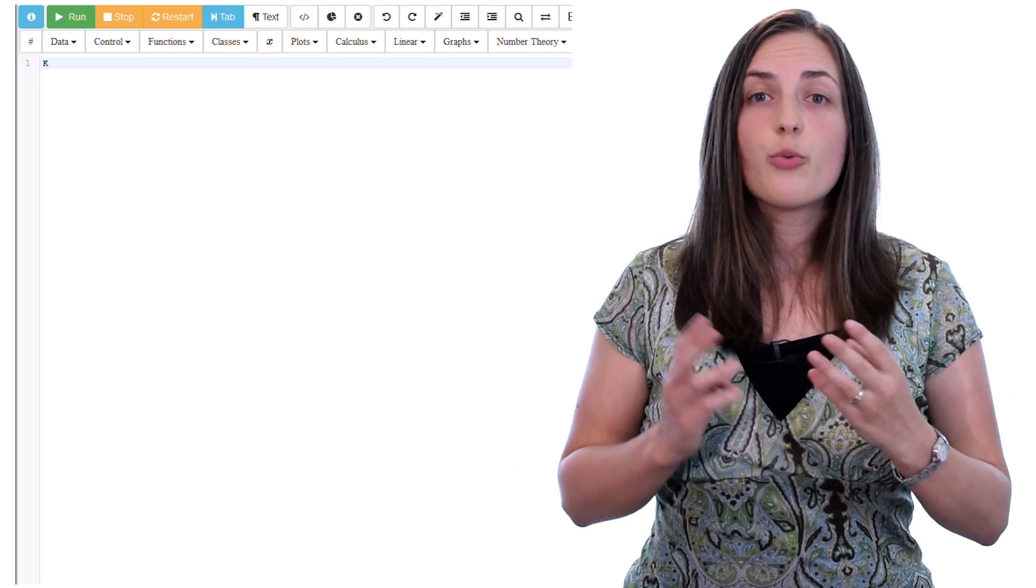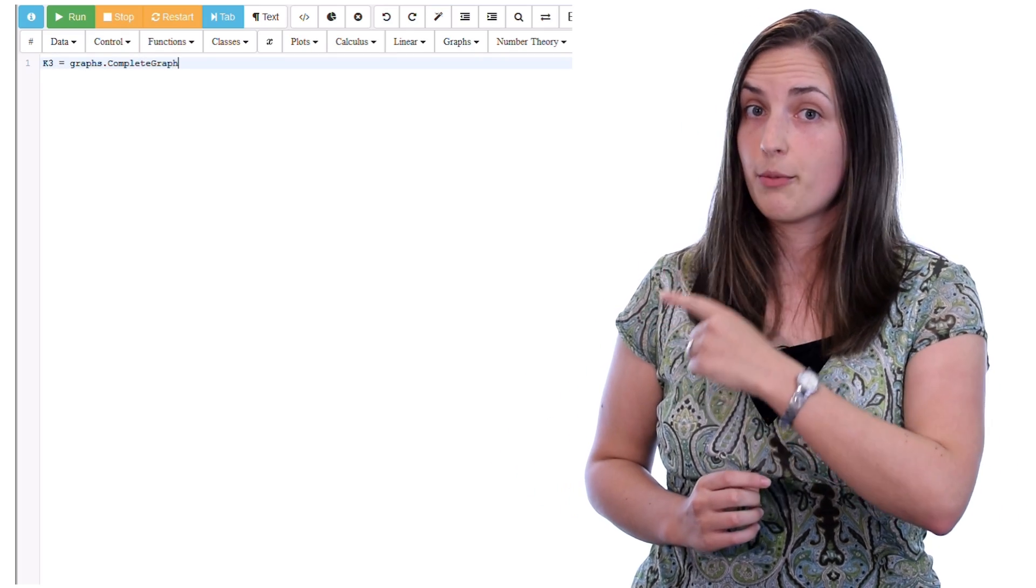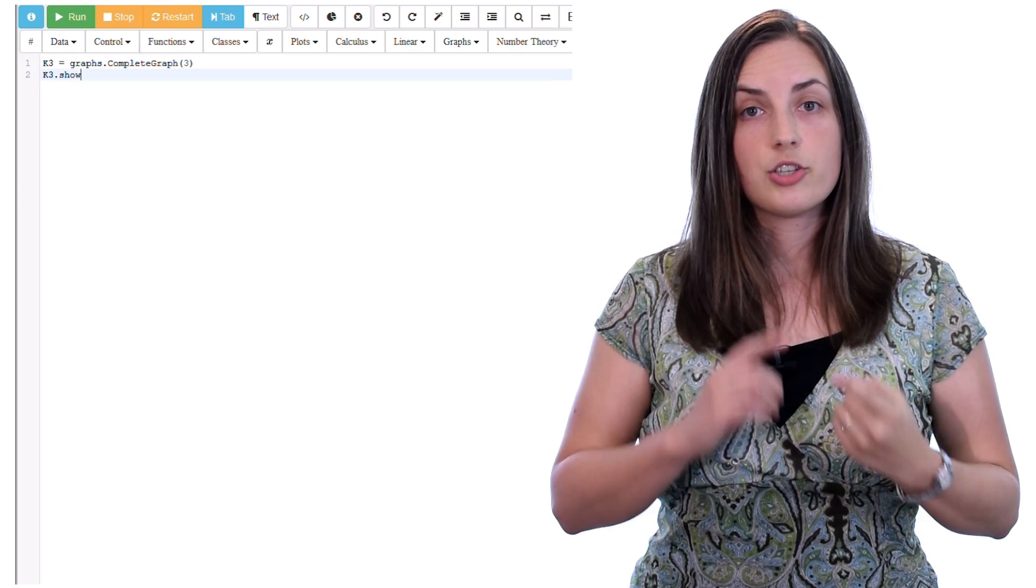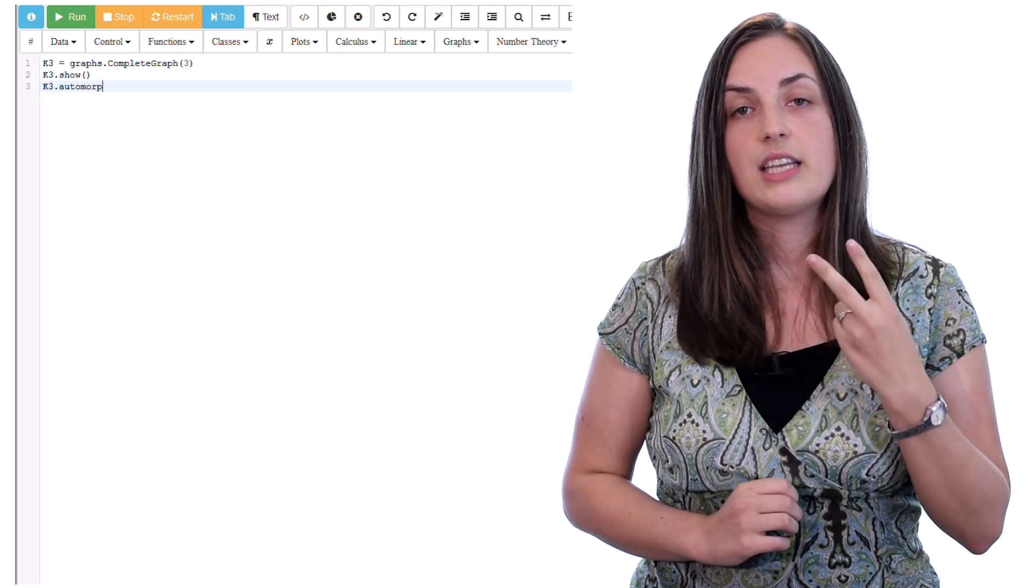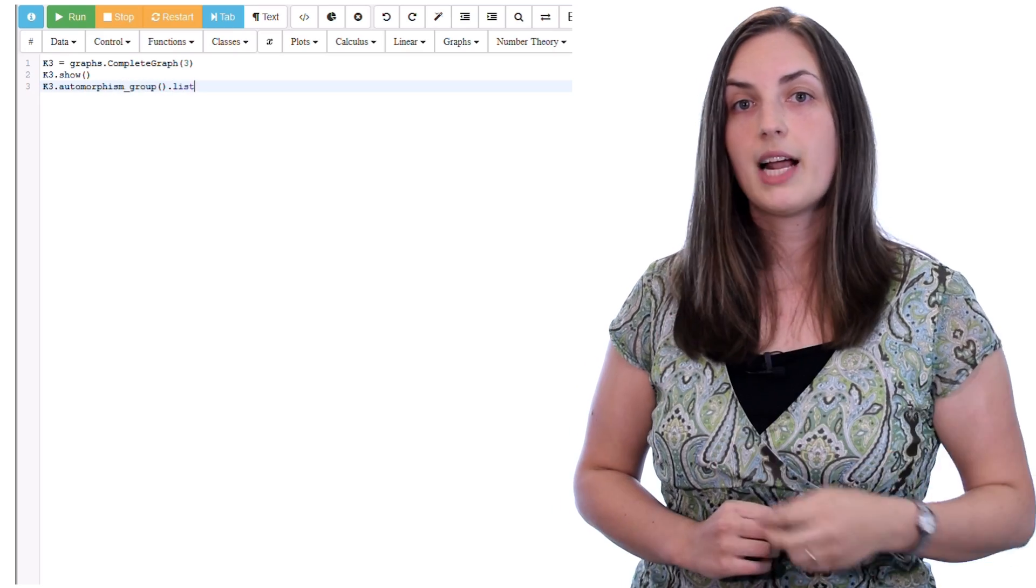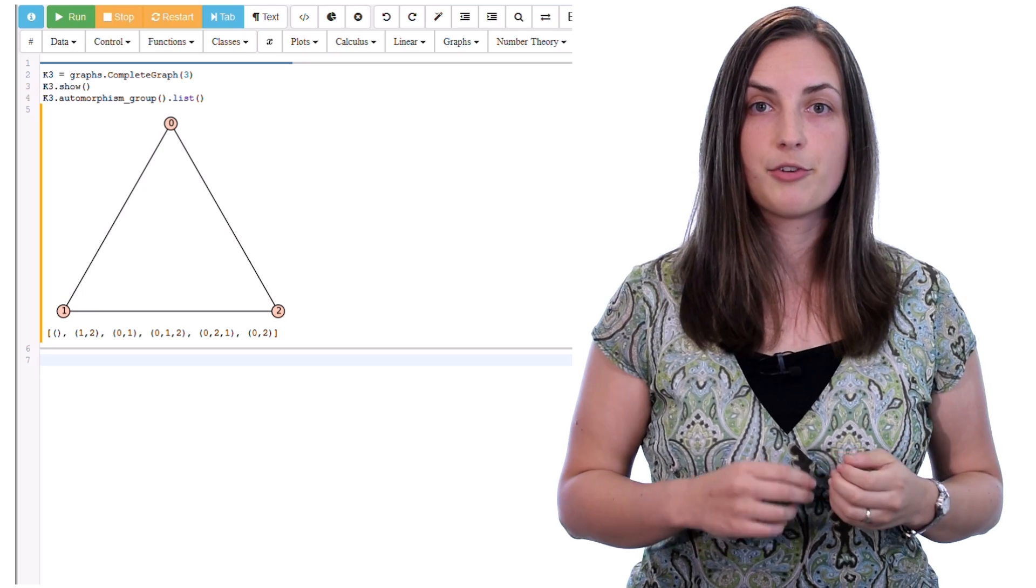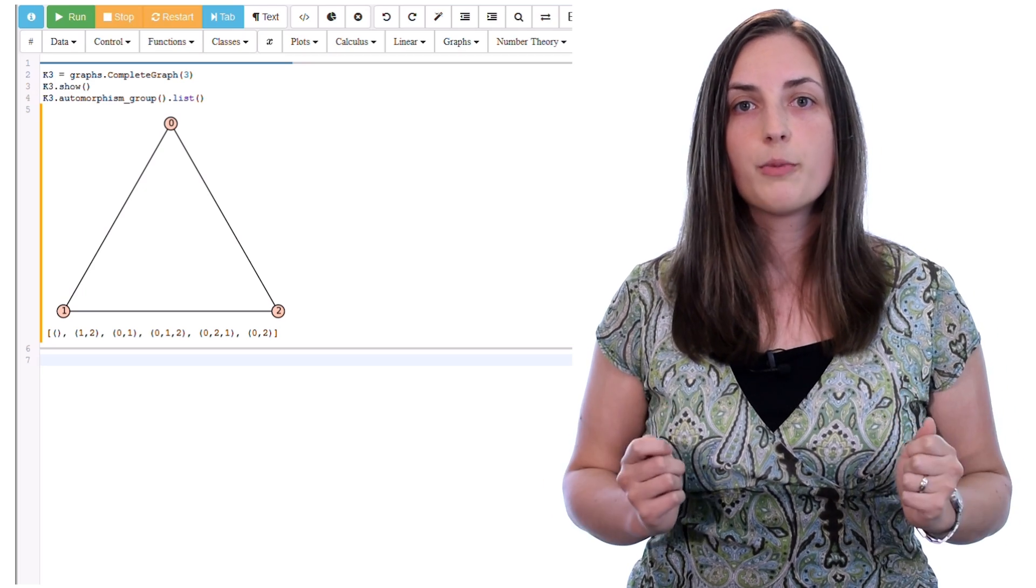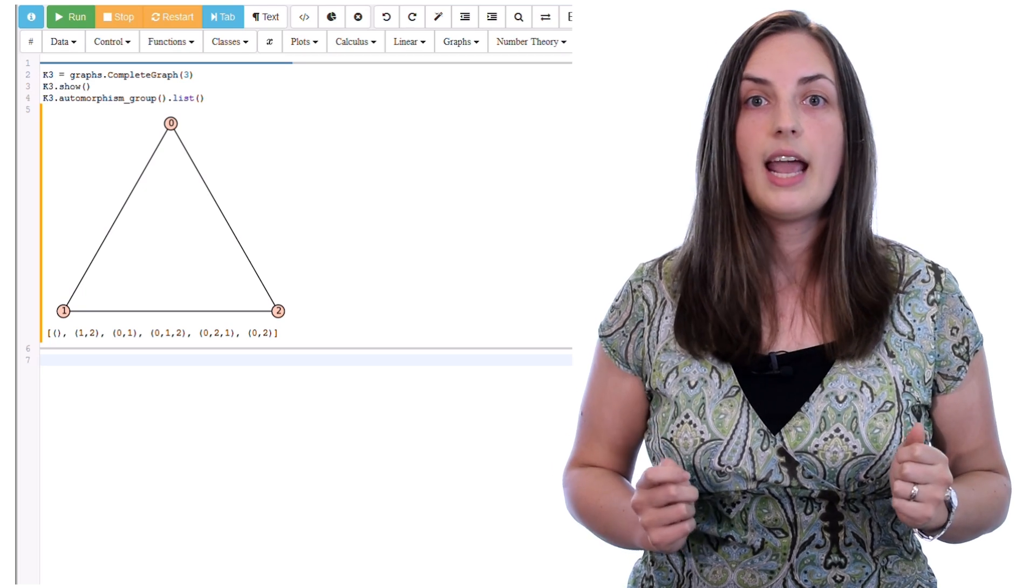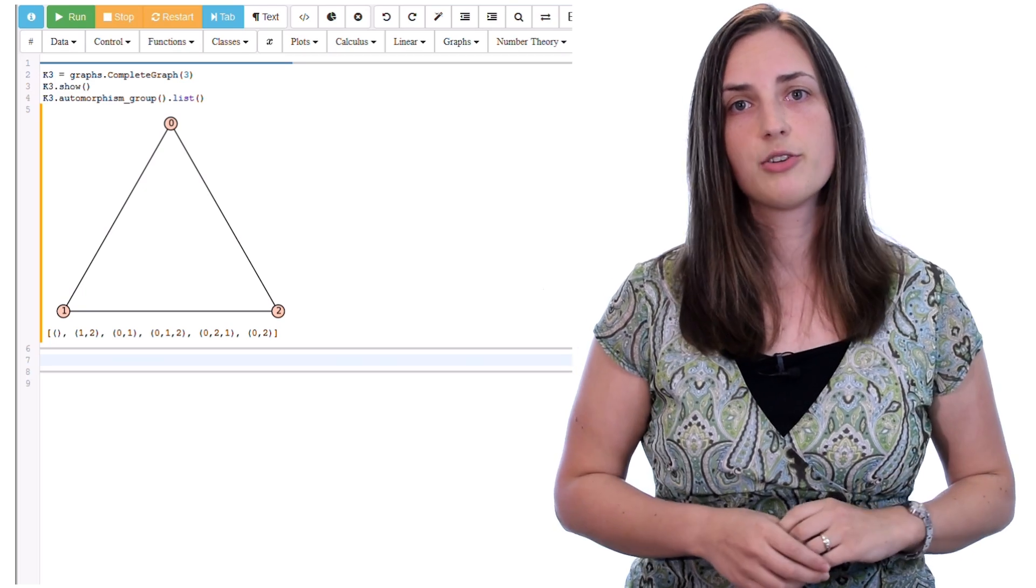What I'm going to do is start with our first example, which is K3. That's the graph, which is the complete graph on three vertices. And I'm going to ask it to show us the graph, and then to list out all of the elements in the automorphism group. Let's see what happens when I run it. Okay, it gives us the triangle, and it decided to label the vertices 0, 1, and 2. And if you look carefully at the automorphism group, you'll see all the elements that we found. The identity, and the flips, and the rotations, they're all there. Okay, so far so good.